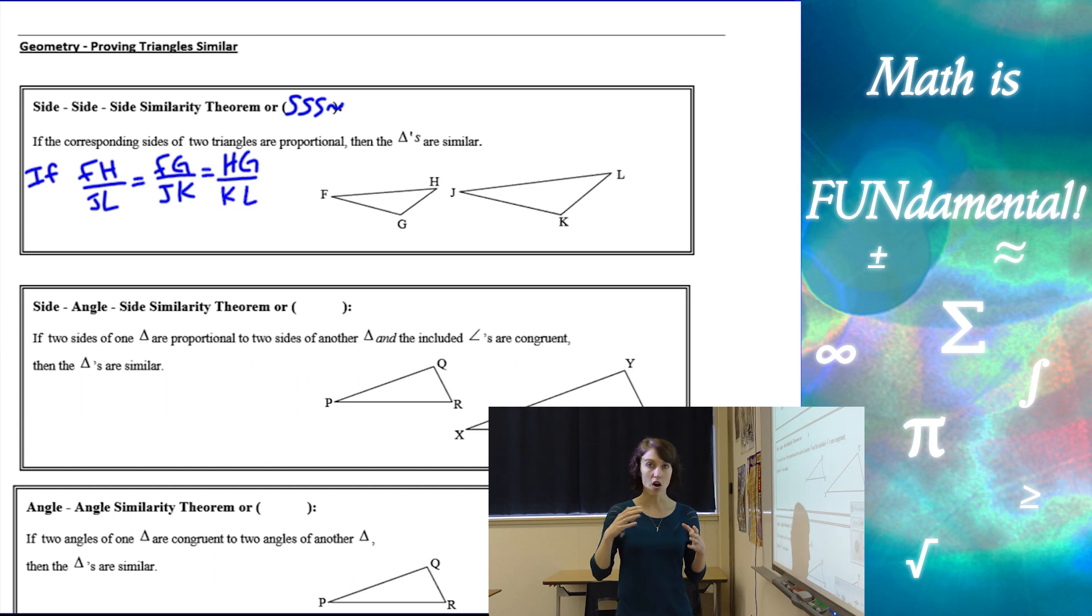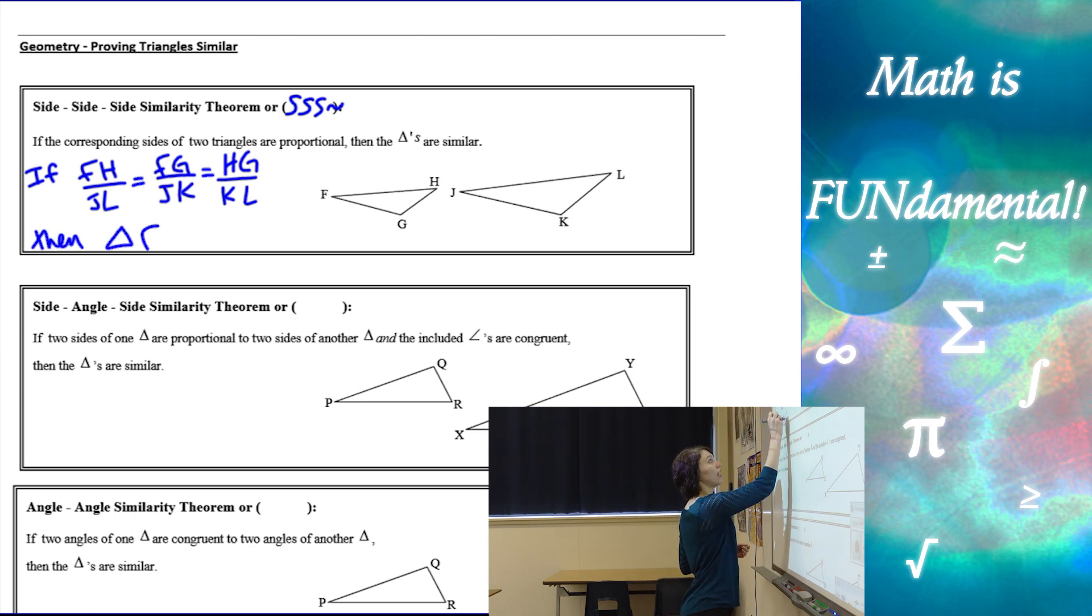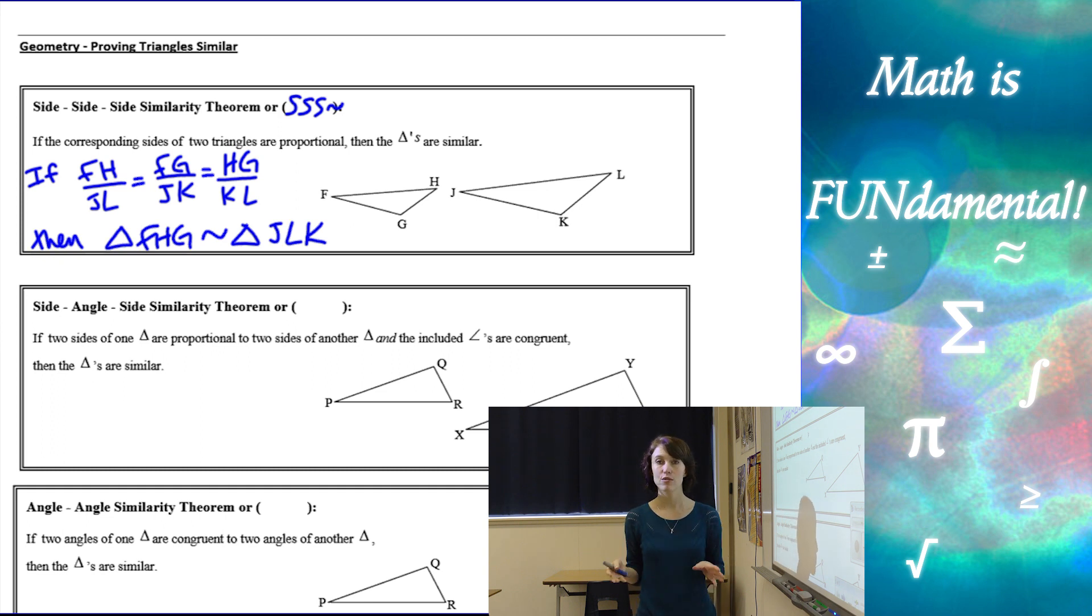So if all three sets of sides are similar or they have the same ratios, then I can say that triangle FHG is similar to triangle JLK. And make sure your similarity statement is in the right order.